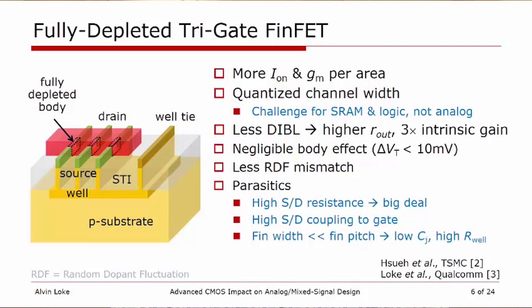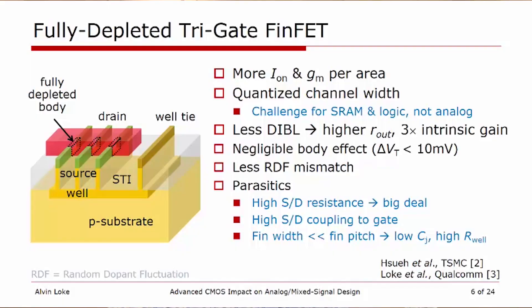However, it does come with bad news. Parasitics are notable when cramming everything into a 3D structure. The source-drain resistance is substantially higher, leading to significant source-drain degeneration — this is a huge deal. Also, the coupling from source-drain to the gate is quite high. Lastly, because the fin width is much less than the fin pitch between fins, the junction capacitance, albeit quite low, results in very high well access resistance, which has implications I'll discuss later.